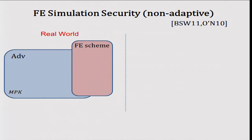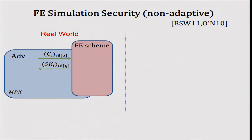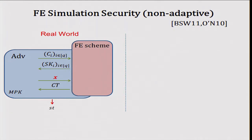In the real world, an adversary gets a master public key and interacts with the functional encryption scheme. He can issue queries for different circuits C_i and get corresponding secret keys. He can also submit a challenge input X and gets an encryption of it — a ciphertext. He then computes and outputs a particular state.